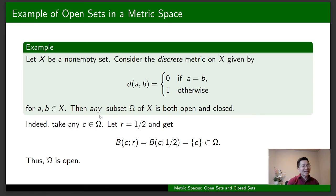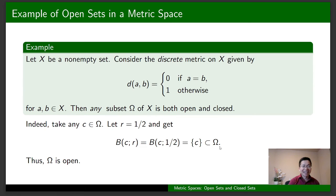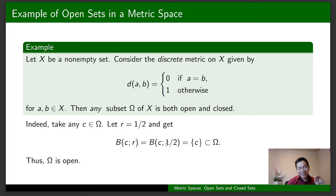To show that Omega is open, we use the definition again by taking any c in Omega and showing that there is some radius r greater than zero such that the open ball centered at c with radius r is a subset of Omega. In this situation, we take r = 1/2, which is a positive real number. The open ball centered at c with radius 1/2 is just the single point set {c}.